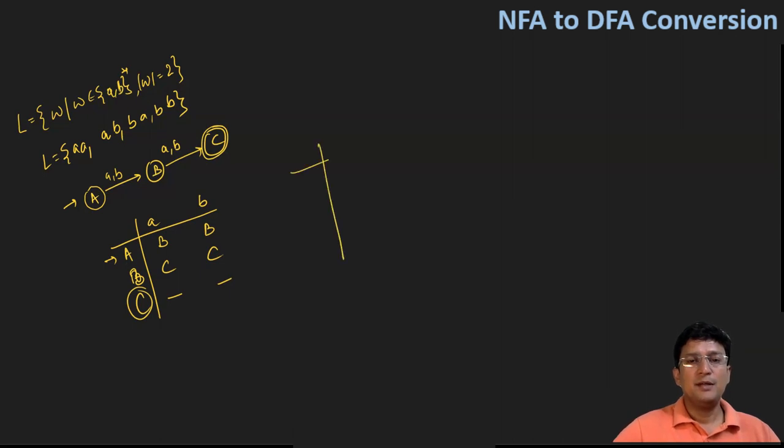So for making the DFA, first write the input or the initial state that is A and see the transitions with A and B symbols. So it moves to B and B only. We are taking these values from the NFA transition table. So the new state that I got here is B.